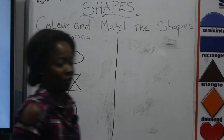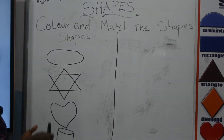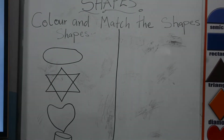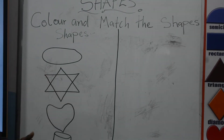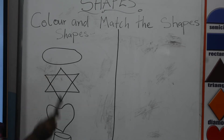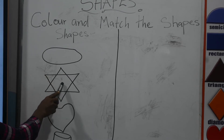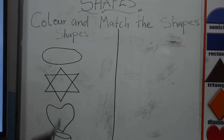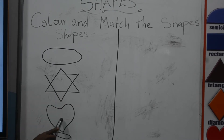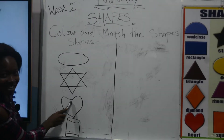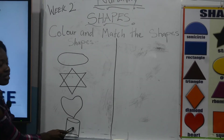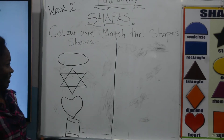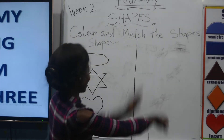Let us learn the names again. Oval — repeat after me: oval. Star. Heart. Cylinder. Well done! Now we are going to match them.